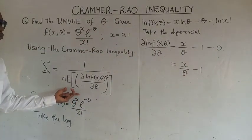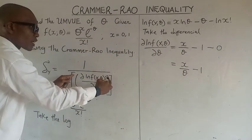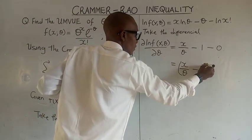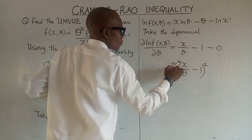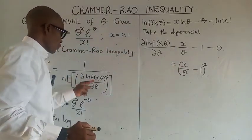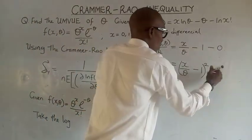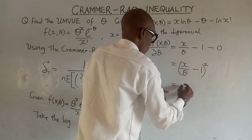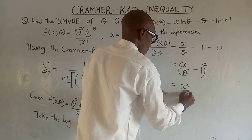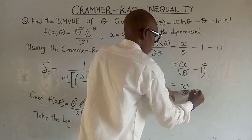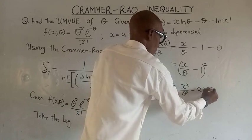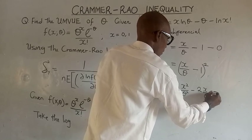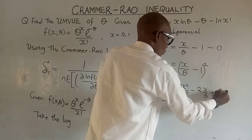From the Cramér-Rao rule, what we do is to take the square first, then take the expectation. We square and take the expectation. Taking the square of x over theta minus 1 gives us x squared over theta squared, minus 2x over theta, plus 1.